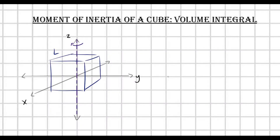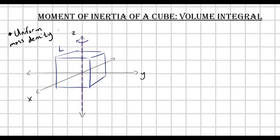Hello there. In this video, I want to calculate the moment of inertia of a cube. Specifically, this cube is going to have a uniform mass density. And I want to find the moment of inertia of this cube about an axis passing right through the center of the cube. We're going to do this with really no assumptions whatsoever, just directly from the definition of moment of inertia.